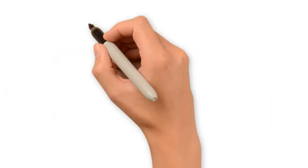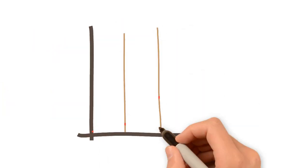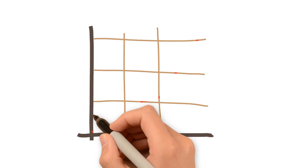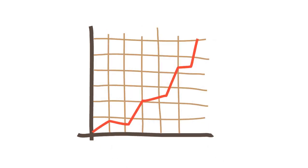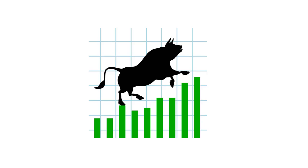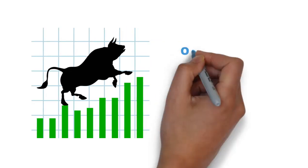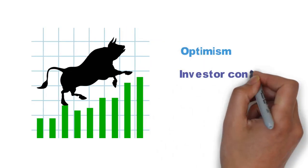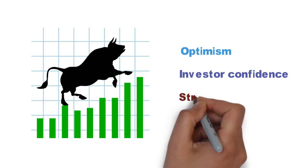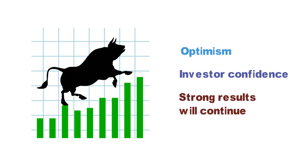Let's get started. A bull market is the condition of a financial market, of a group of securities in which prices are rising or are expected to rise. The term bull market is most often used to refer to the stock market but can be applied to anything that is traded, such as bonds, real estate, currencies, and commodities. Bull markets are characterized by optimism, investor confidence, and expectations that strong results should continue for an extended period of time.